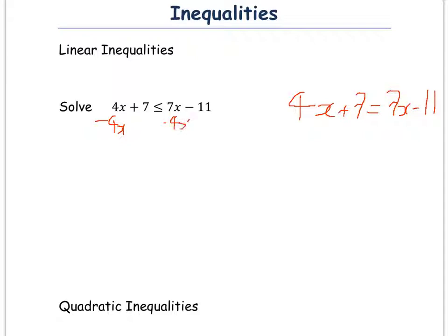If I do that, I'm then left with 0x here, but I'm left with 7 less than or equal to 3x minus 11.